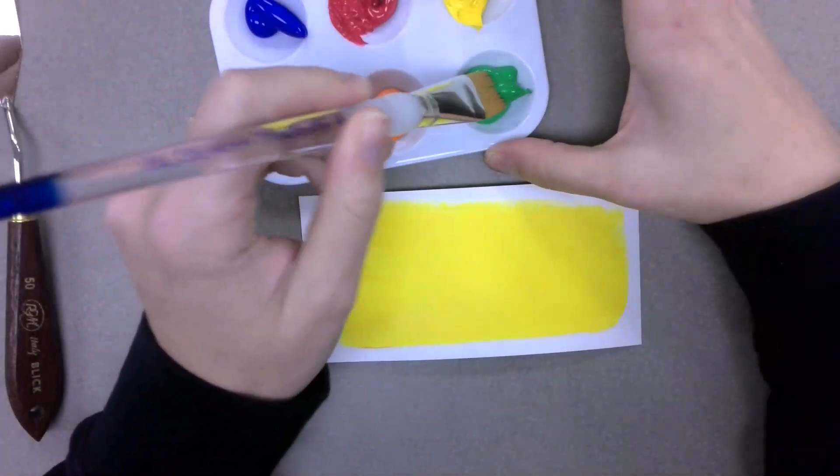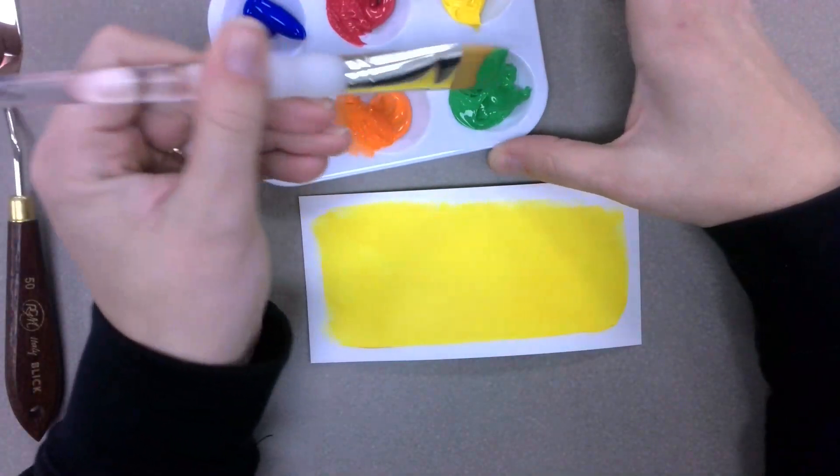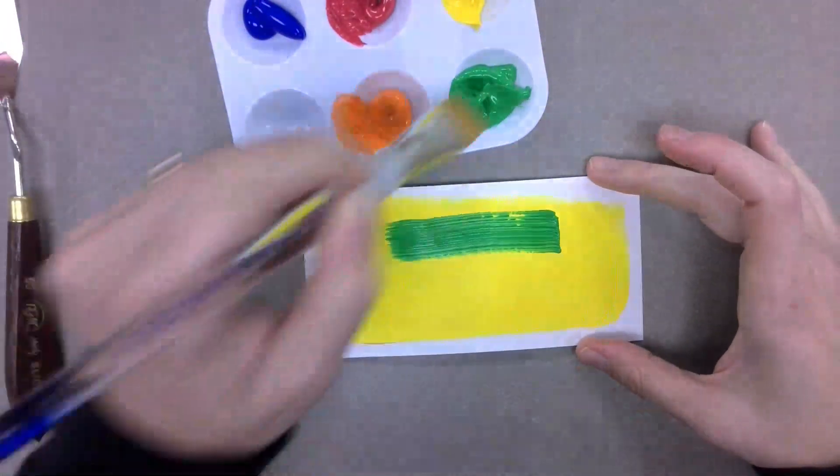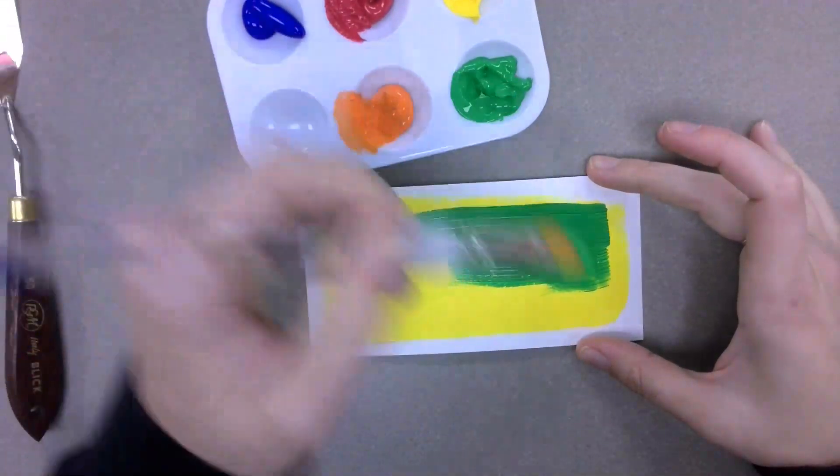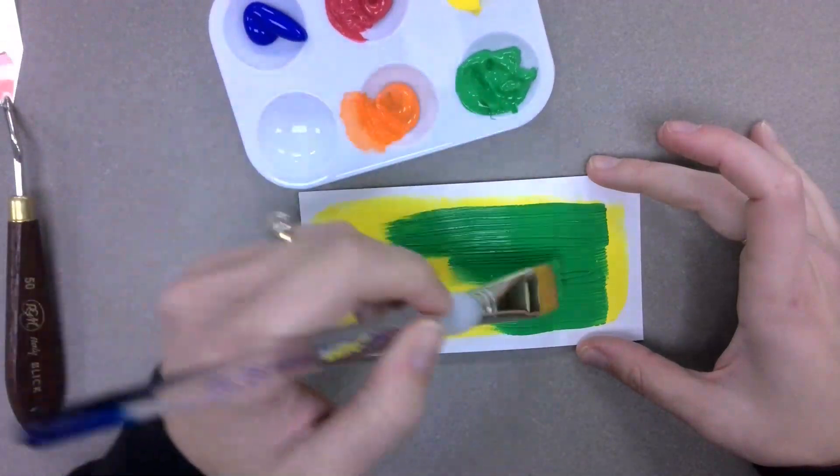And I'm going to lay down another layer right on top of it, a layer of green. And I'm going to make this rather thick so that you don't see the yellow coming through. So it might be quite a bit of paint on there.